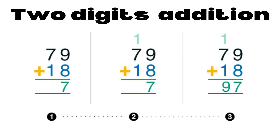For two-digit addition, first add the ones group, then add the tens group.